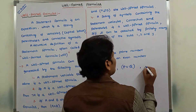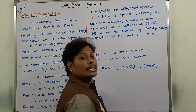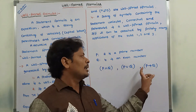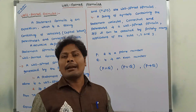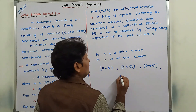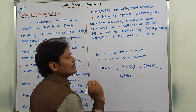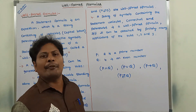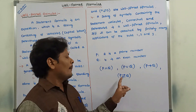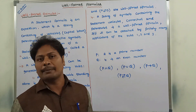The next one is also a statement formula. Here P and Q are two statement variables, this is the conditional connective, and parenthesis is also there. Next, P biconditional Q — this is also a statement formula, where P and Q are two statement variables. This is a biconditional connective, and parenthesis is also there.